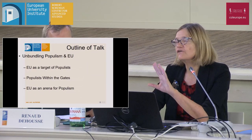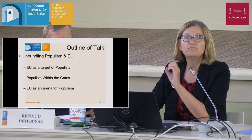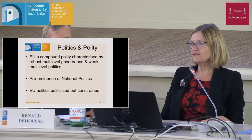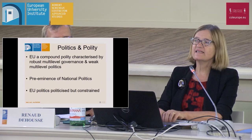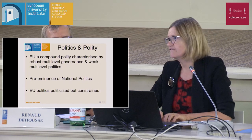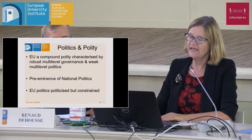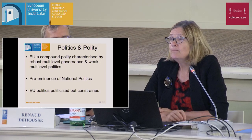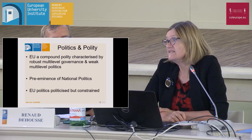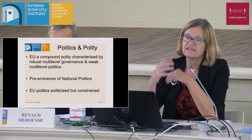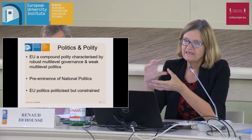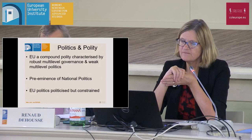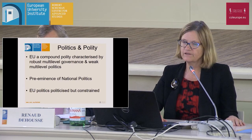There are three features of the EU as a political order that we must keep in mind. The first is the nature of the EU as a polity. It's a compound polity with extremely strong and robust multi-level governance. If you look at the policy output of the EU, its legislative output, its capacity to govern different policy areas — that's not matched by multi-level politics. Multi-level politics is much weaker than multi-level governance, and that's partly because in terms of legitimate politics in Europe, national politics remains preeminent.